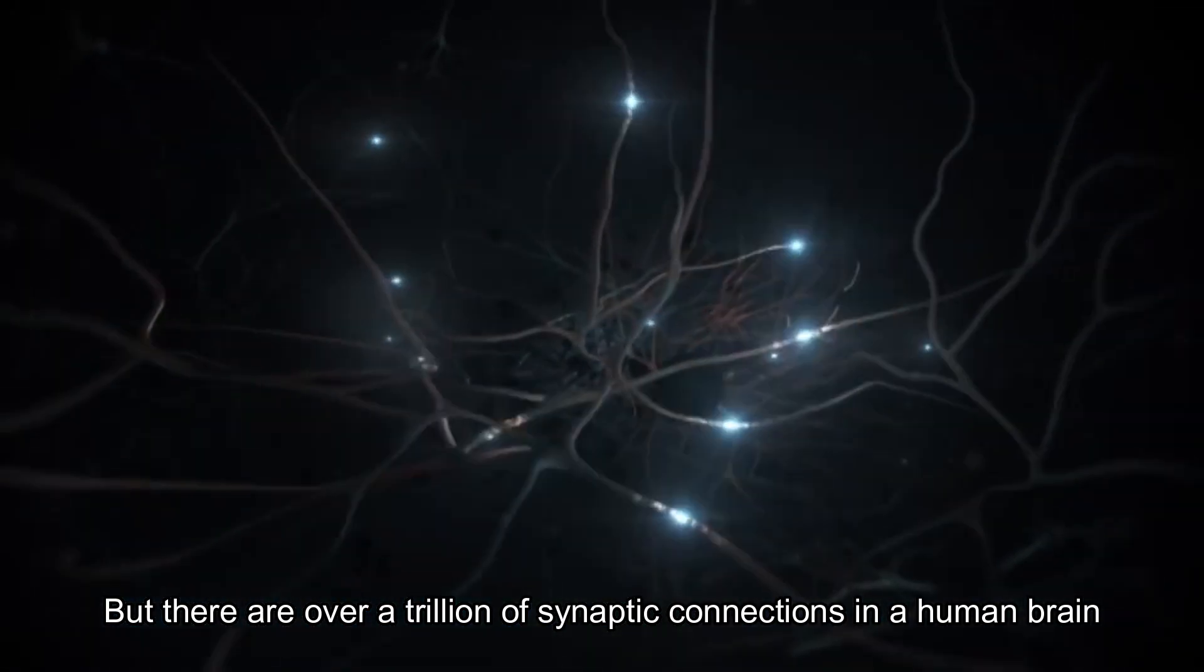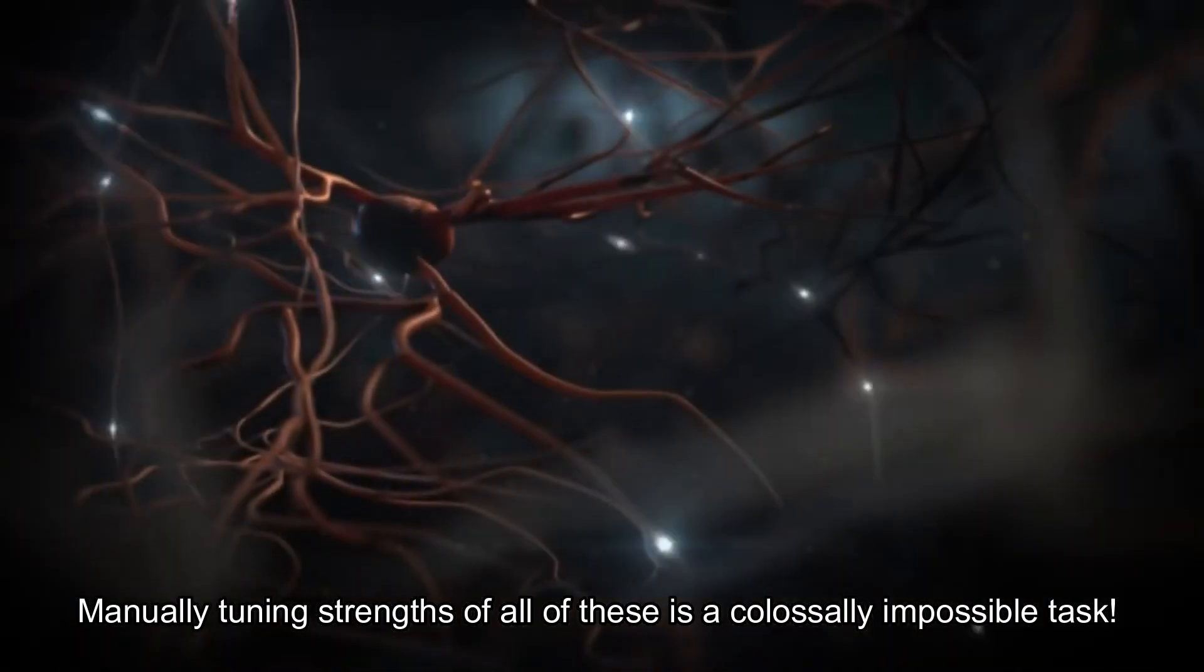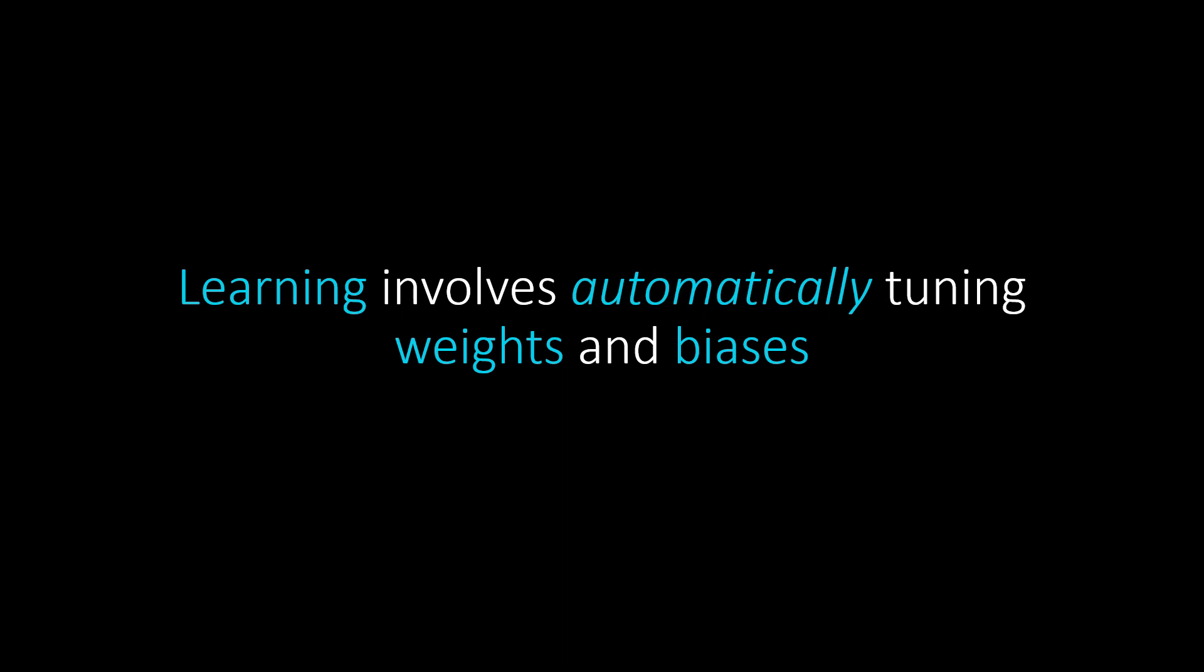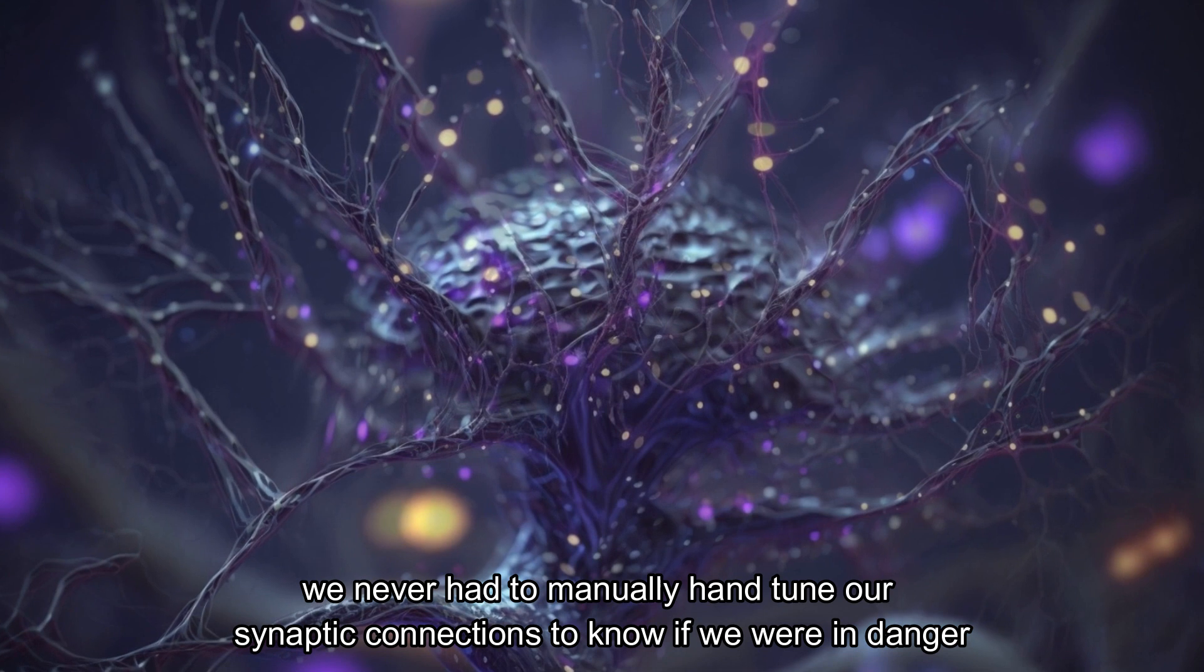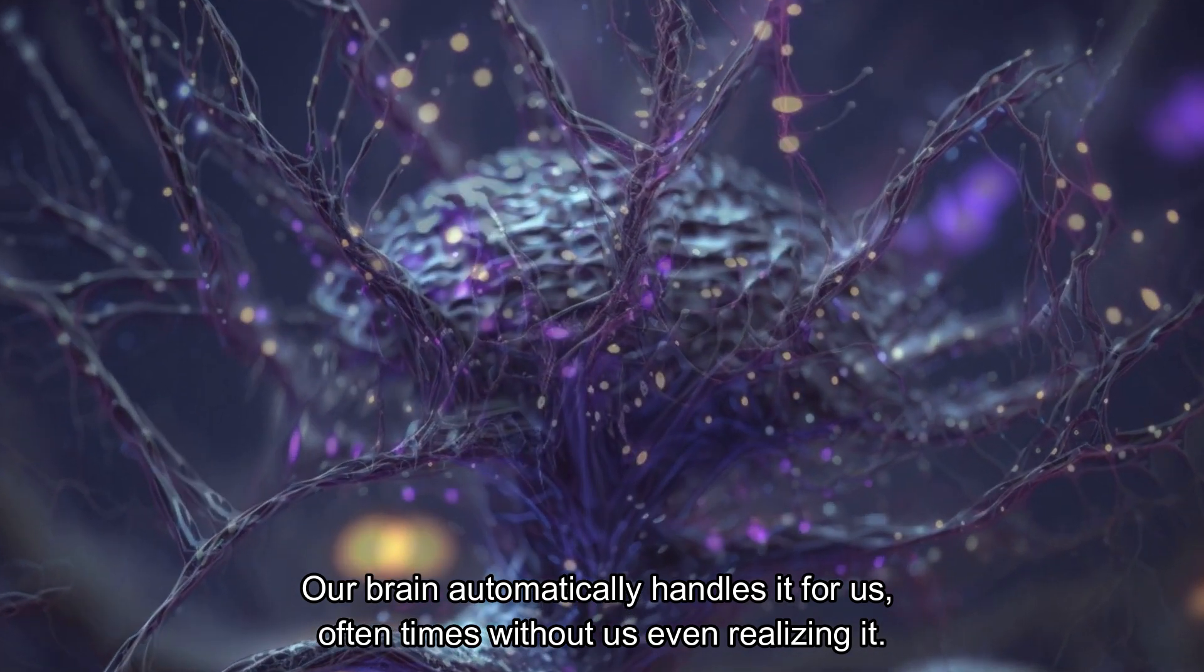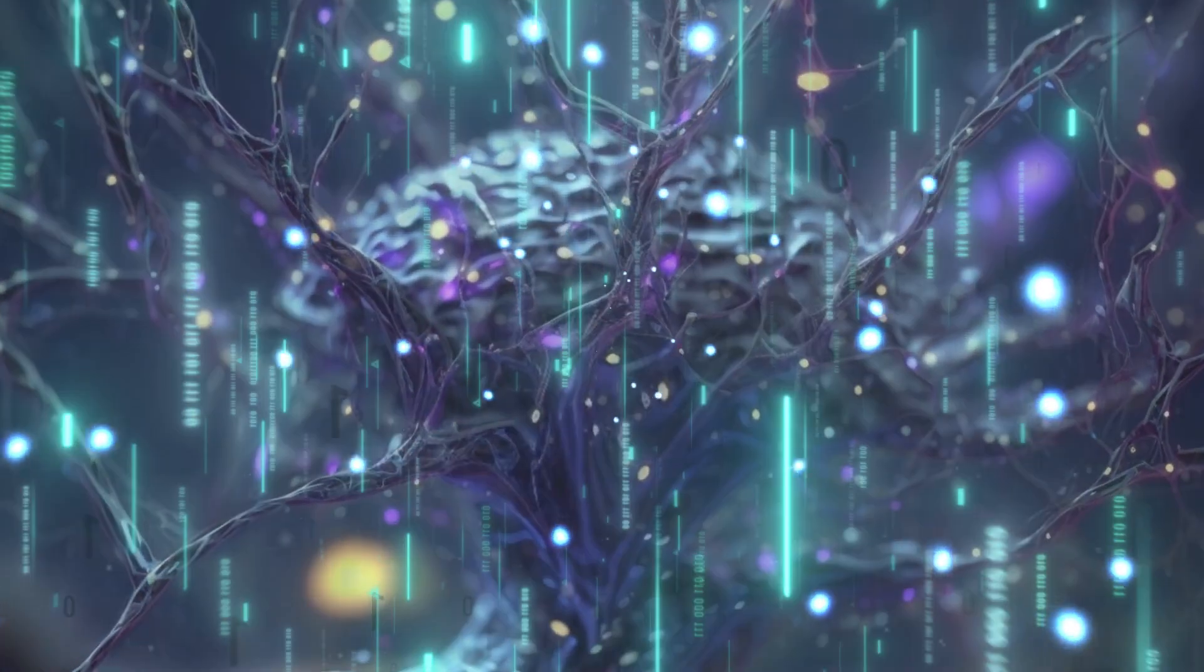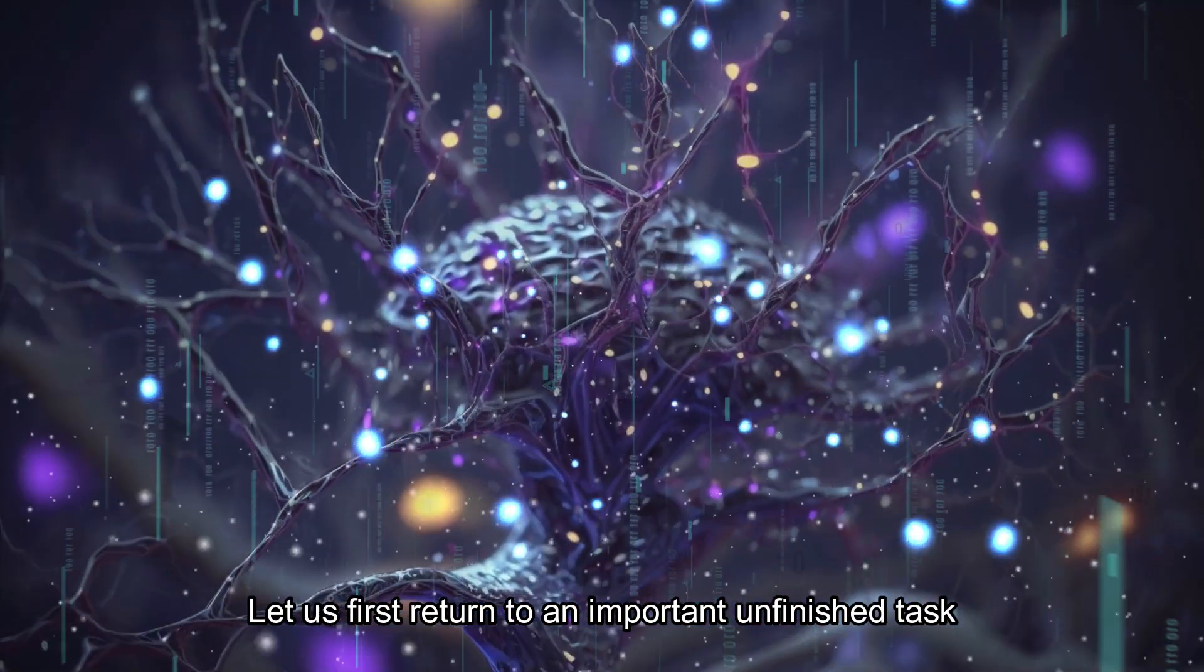But there are trillions of synaptic connections in a real human brain. Manually tuning their strengths can be a colossally impossible task. So here is the final missing piece: learning is not merely tuning these weights, it is automatically doing so. And as a side note, all tunable parts of our model, such as weights and biases, can be referred to as parameters. Come to think about it, we never had to manually hand tune our synaptic connections to know if we were in danger. Our brains automatically handle it for us, oftentimes without us even realizing it. So how can we accomplish this in our simulation?